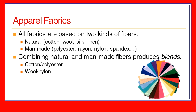All fabrics are based on two kinds of fibers. The first is natural — naturally occurring in the earth: cotton from a plant, wool from a sheep, silk from a worm, linen from flax. The second is man-made: mixing chemical compounds to create fibers, giving us polyester, rayon, nylon, and spandex. We can also create fabric blends by combining natural and man-made fibers — the most common being cotton and polyester.